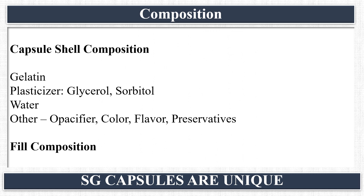The composition of soft gelatin capsules is divided into two parts: capsule shell composition and fill composition. In this video, we will focus on the shell composition. Shell composition impacts the stability of the drug and the entire formulation, so it is very important. The shell composition is selected based on the fill composition, and the fill composition can also be modified based on the capsule shell composition — both are very important.